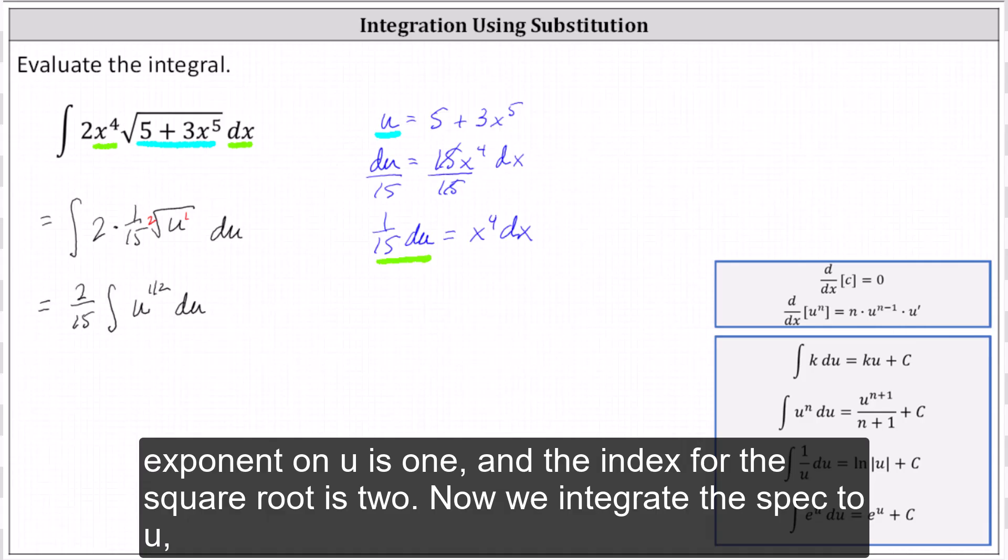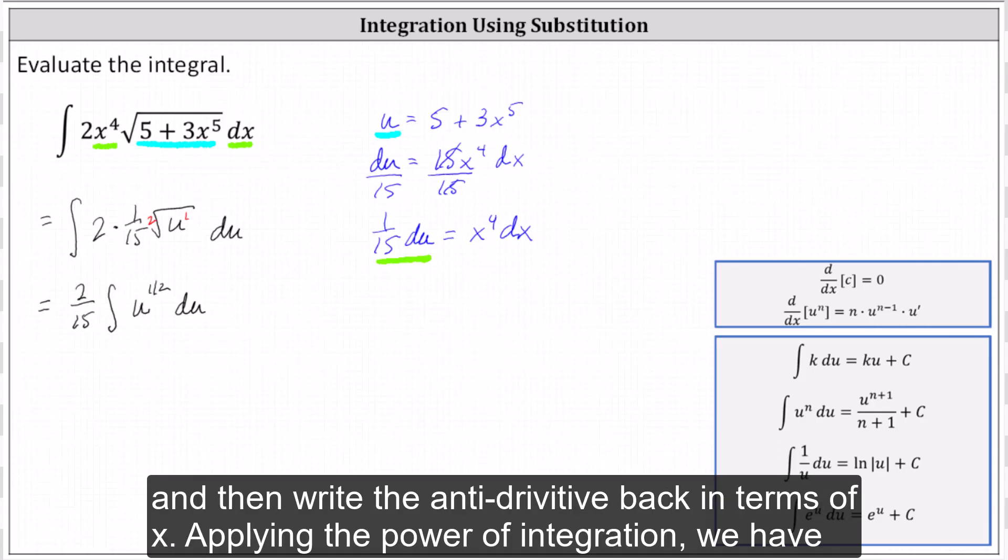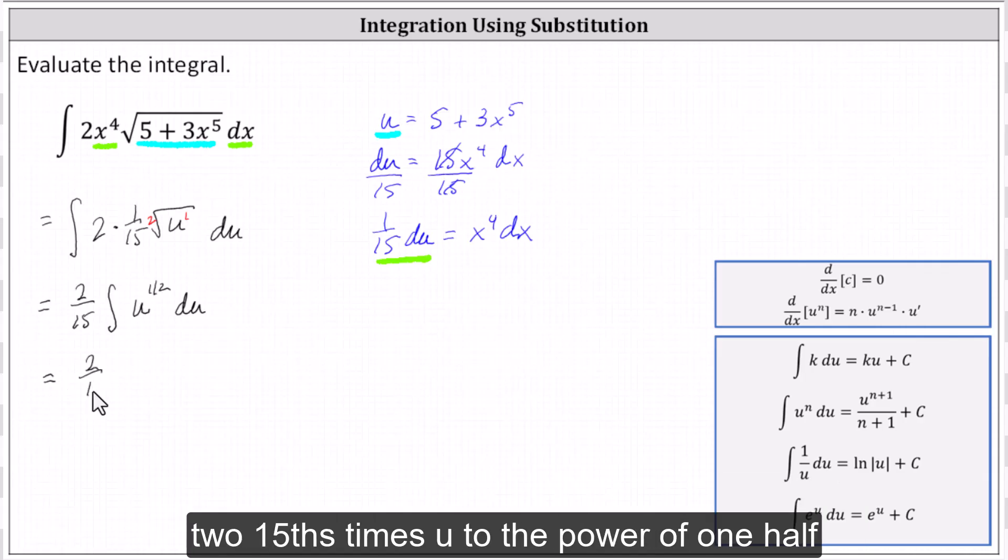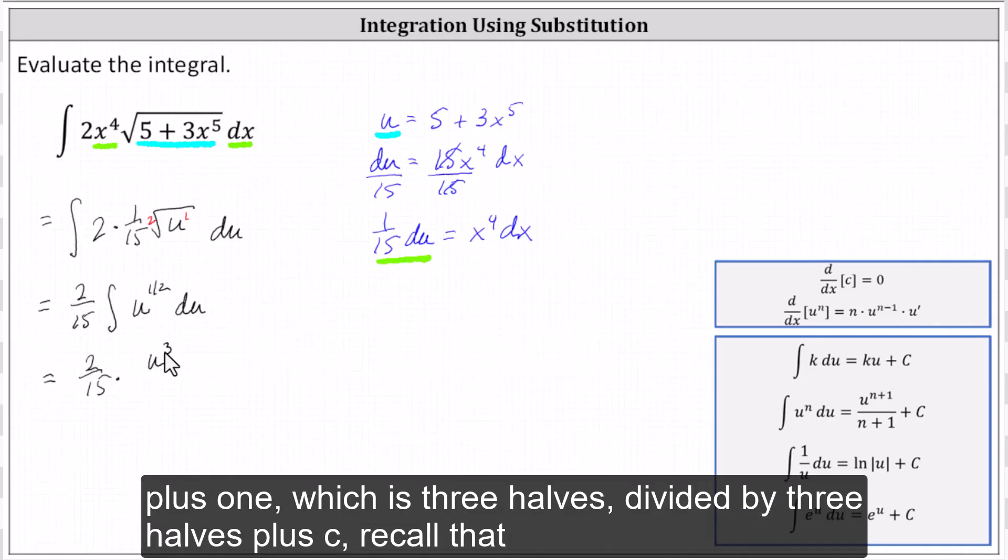Now we integrate with respect to u and then write the antiderivative back in terms of x. Applying the power rule of integration, we have 2/15 times u to the power of 1/2 plus one, which is 3/2 divided by 3/2 plus c.